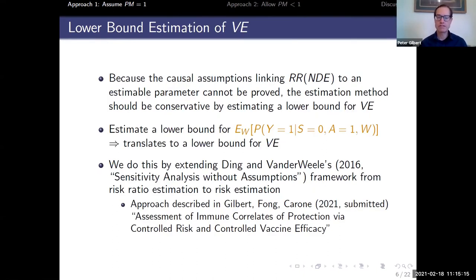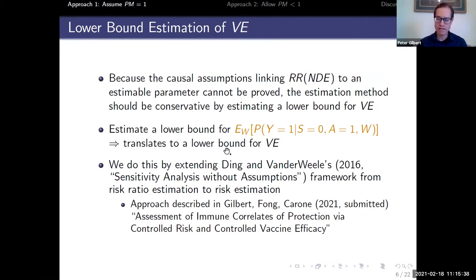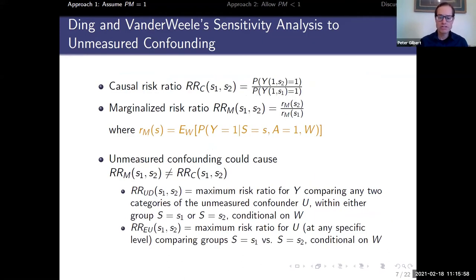In general for these counterfactual placebo methods, it's appropriate to estimate a lower bound for VE, because we can never absolutely prove all causal assumptions hold. Our task is to estimate a lower bound for the highlighted term — the counterfactual placebo risk — because a lower bound on that translates to a lower bound for vaccine efficacy. To get a lower bound formally we're going to access Ding and VanderWeele's sensitivity analysis framework, which is the major topic of a paper we just submitted.